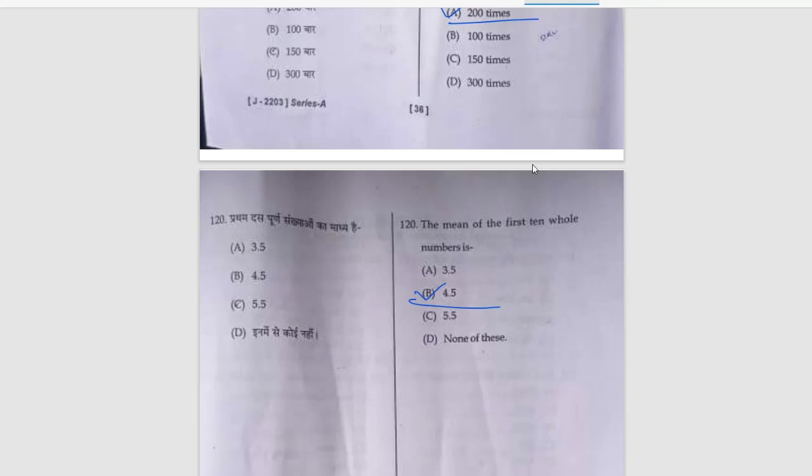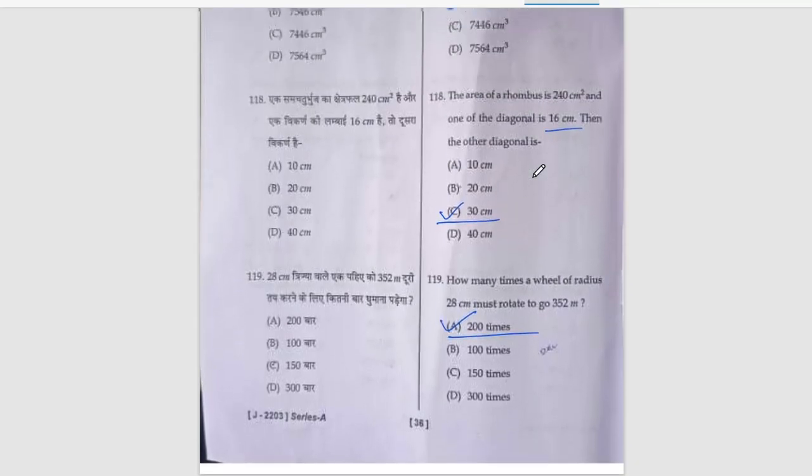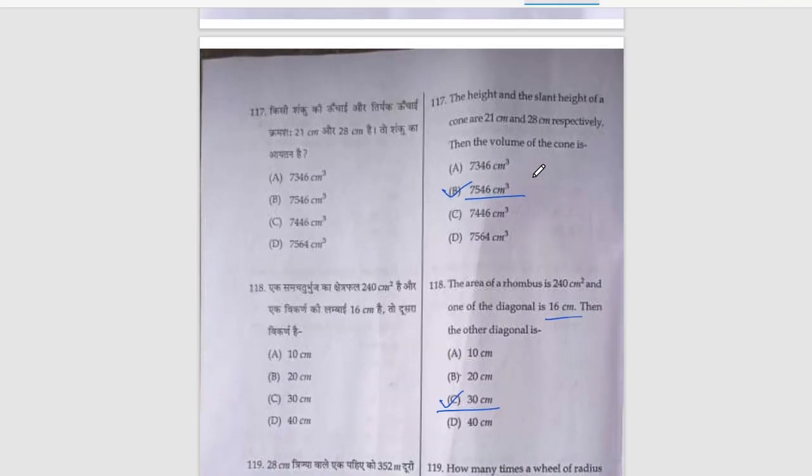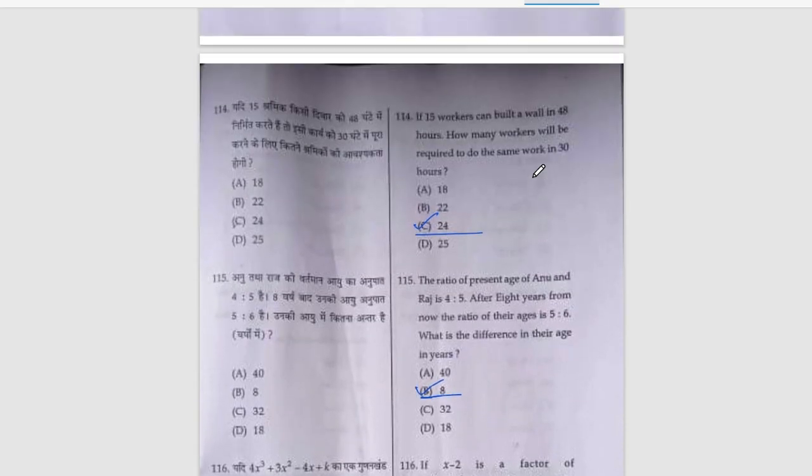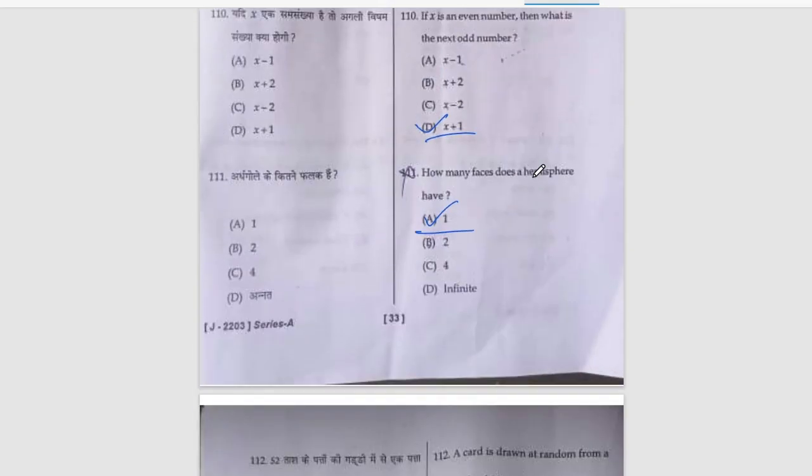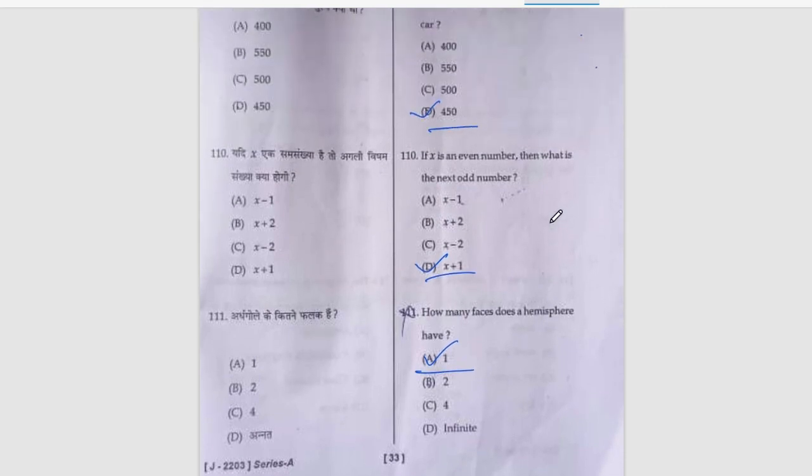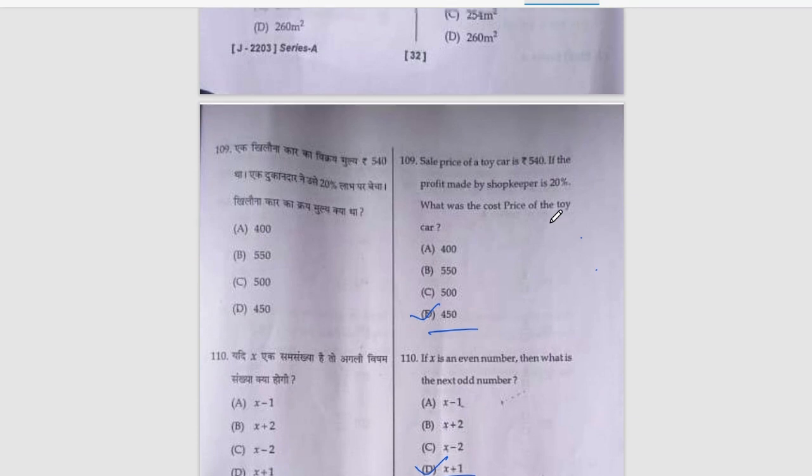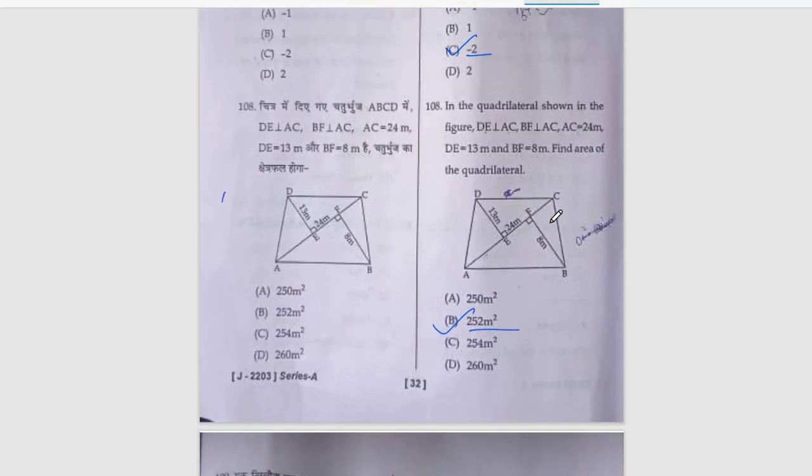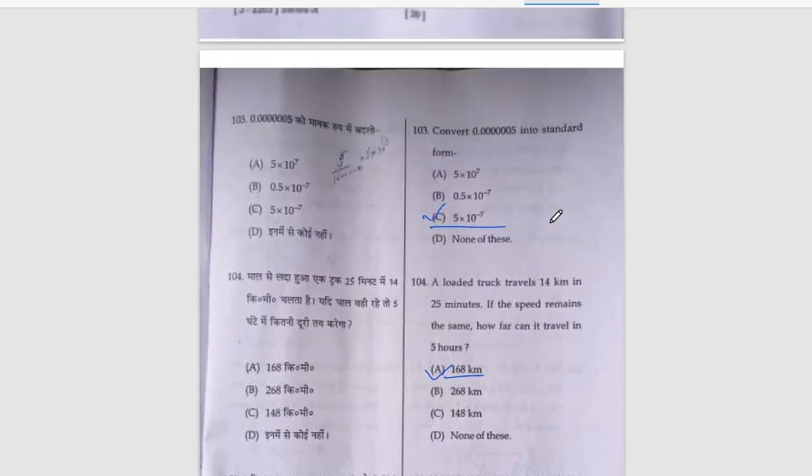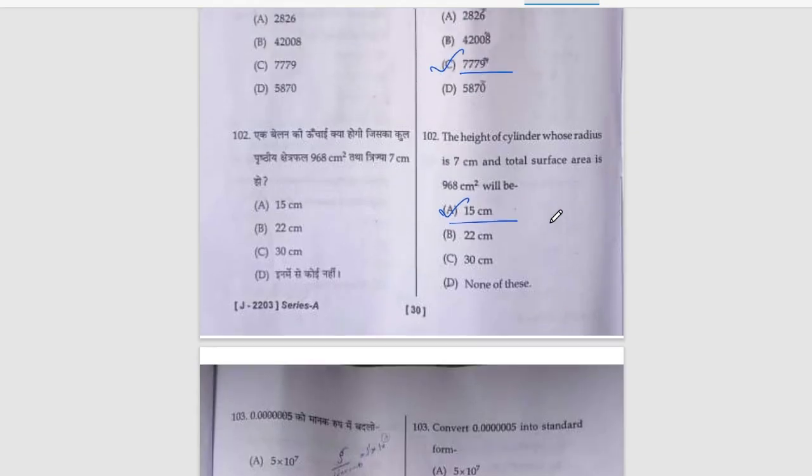Now the questions that are repeated: I have checked from 2021, question 118, question 113, next is sale price of toy car. Next one is height of cylinder whose radius is 7 cm, question 102.